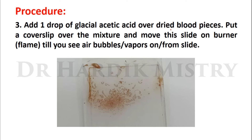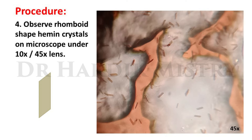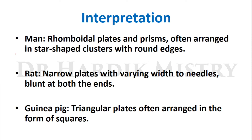After heating, observe the rhomboid-shaped hemin crystals on the microscope under 10x or 45x lens. The crystals you are seeing are hemin crystals with a rhomboid shape, characteristic of human origin blood. For interpretation: if the blood is of human origin, hemin crystals appear as rhomboidal plates with prisms, often arranged in star-shaped clusters with round edges.